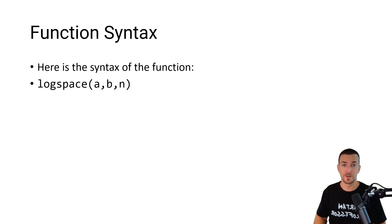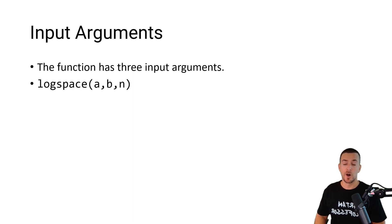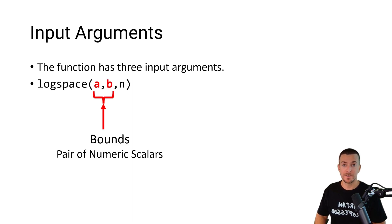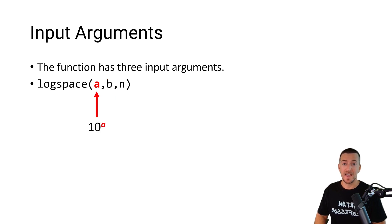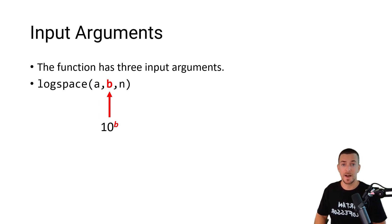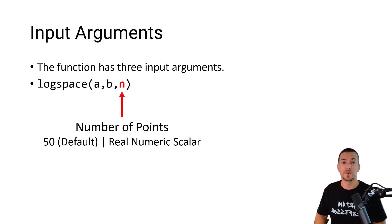Here is the syntax of the function, where logspace is the name of the function and the input arguments are enclosed in parentheses. The function has three input arguments. A and B are the bounds specified as a pair of numeric scalars, where A is the first bound, which corresponds to 10 to the power of A, and B is the second bound, which corresponds to 10 to the power of B. N is the number of points, specified as a real numeric scalar with a default value of 50.